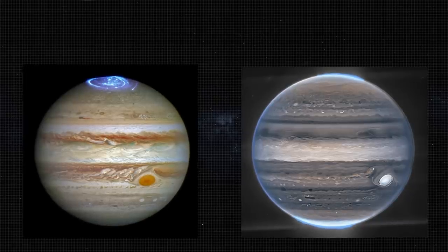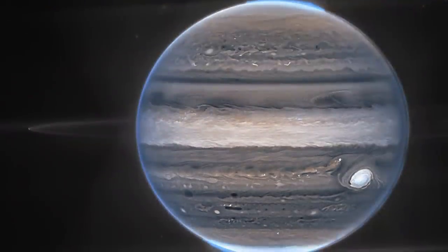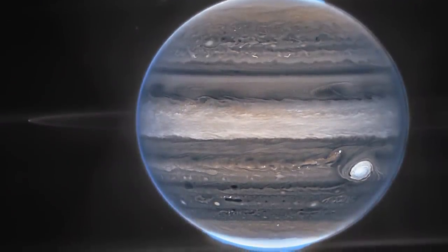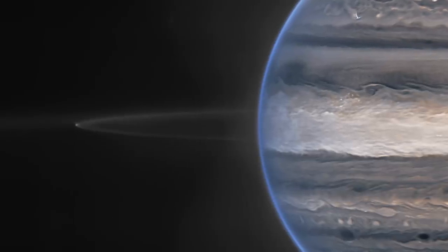The Hubble telescope has taken some beautiful images of Jupiter, but the Webb telescope shows details that Hubble just can't see. And you can even see a faint ring around the planet, with the north and south auroras glowing brightly.